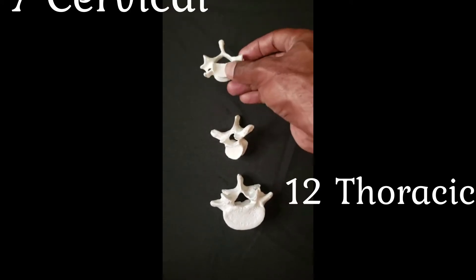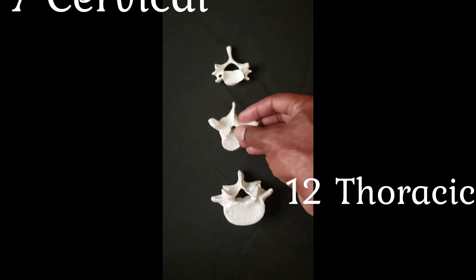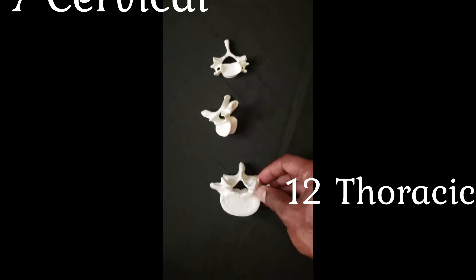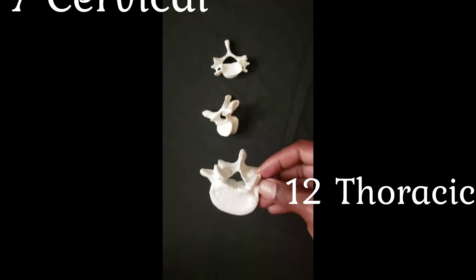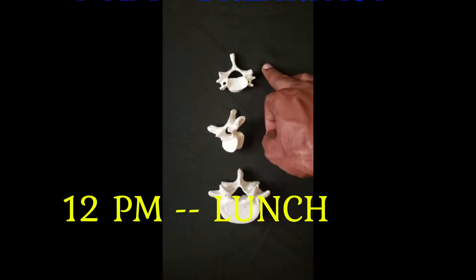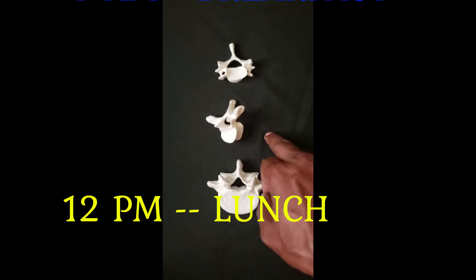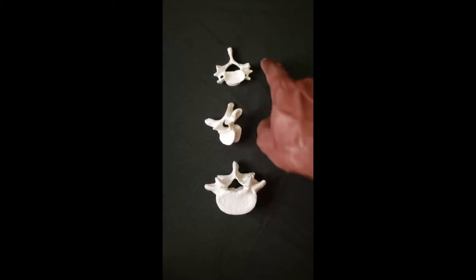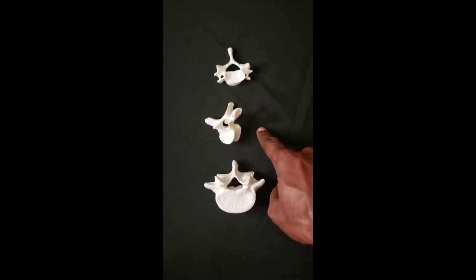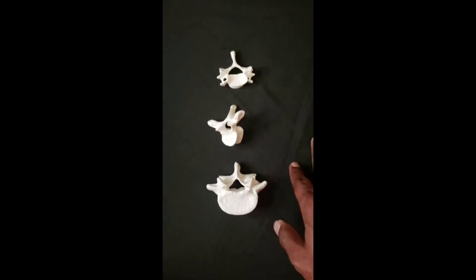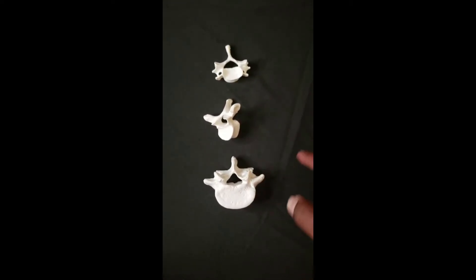There are seven cervical vertebrae, there are 12 thoracic vertebrae, and there are five lumbar vertebrae. That's the breakfast, lunch, dinner method: early breakfast at seven, lunch at 12, and early dinner at five. Each one of them is totally different from the other and they have different responsibilities.